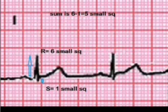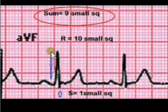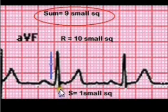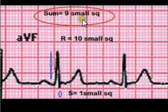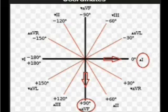Similarly, we now calculate for Lead AVF. Count the number of small squares — the R wave is around 10 millimeters in height, which is 10 small squares. The S wave is a negative deflection of around 1 small square, so the net sum is 10 minus 1, which equals 9 small squares for Lead AVF. These are the values we will now plot on the coordinates to calculate the exact axis.